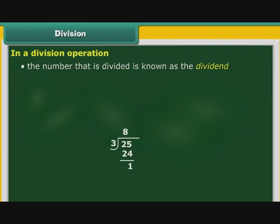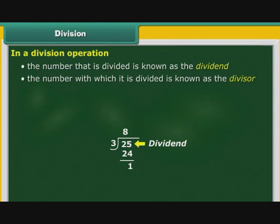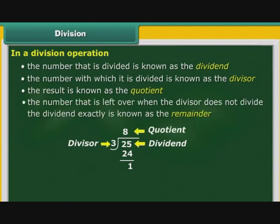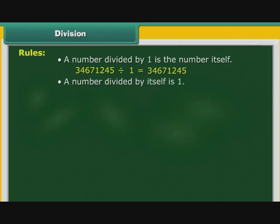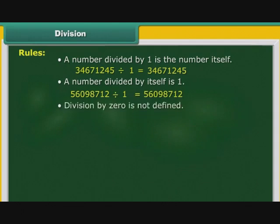Division. In a division operation, the number that is divided is known as the dividend, the number with which it is divided is known as the divisor, the result is known as the quotient, and the number left over when the divisor does not divide the dividend exactly is known as the remainder. Let us look at some rules of division. A number divided by 1 is the number itself: 34671245 ÷ 1 = 34671245. A number divided by itself is 1: 56098712 ÷ 56098712 = 1. Division by 0 is not defined: 56795432 ÷ 0 = not defined.